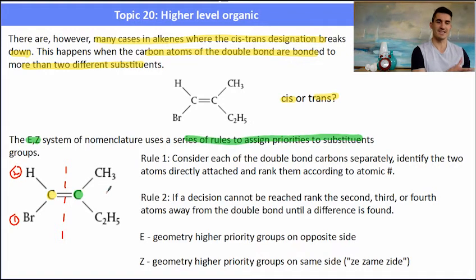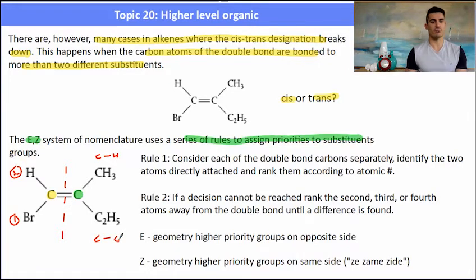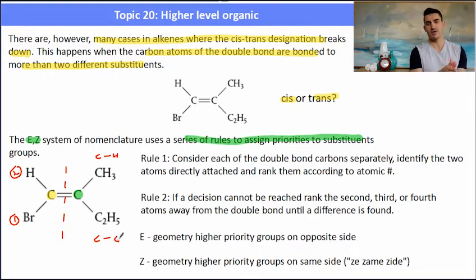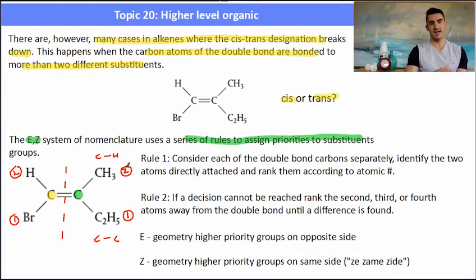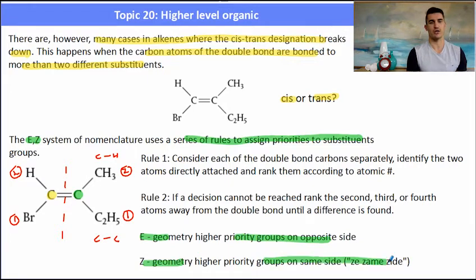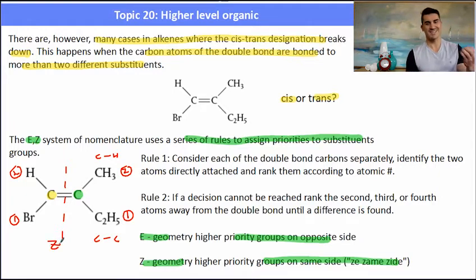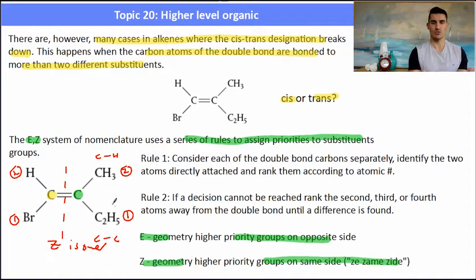Bromine has a higher atomic number than hydrogen, so it is given the higher priority; hydrogen is number two. For the right-hand side, we have a carbon bonded to a hydrogen, and in the other we have a carbon bonded to another carbon. Using that rule — one carbon vs. one carbon — we look at the next atom: carbon is greater than hydrogen, so the C₂H₅ group has the priority. E geometry is where the priority groups are on opposite sides, and Z geometry is where they are on the same side — 'Z same side' is a good way of remembering it. That molecule there is the Z isomer.